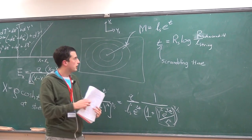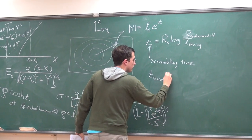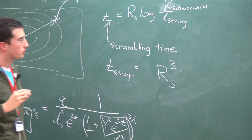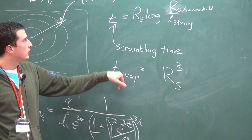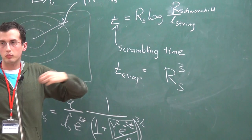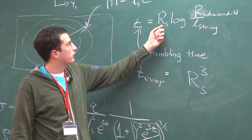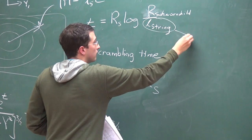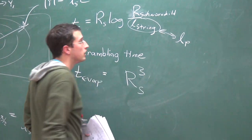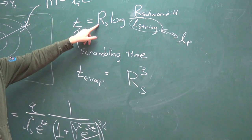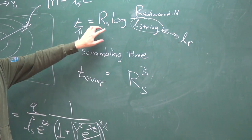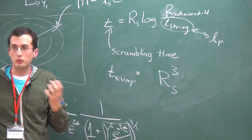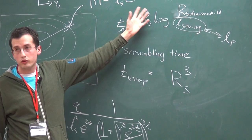The other time scale from yesterday was the evaporation time, which is roughly R-Schwarzschild cubed in Planck units. This is a really long time. The scrambling time is R times log R — this is just log enhanced over the light crossing time. In terms of astrophysical black holes, every astrophysical black hole is older than its own scrambling time, but the evaporation time is way in the future. So these are the two timescales associated with black holes.